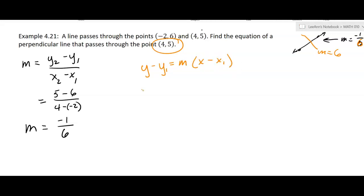And we're going to put in everything we know, y minus 5 equals 6. That's our slope, x minus 4. And so we'll do some distributing, and then add the 5 over.